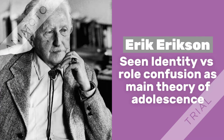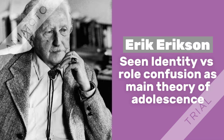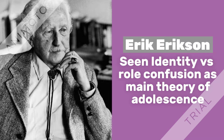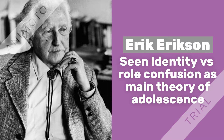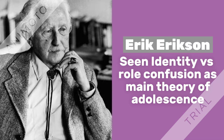Erik Erikson believes that identity and role confusion occurs during the 12 to 18 years gap and that the transition from childhood to adulthood is the most important because the child has to learn the roles he will occupy as an adult and the adolescent will re-examine his identity and try to find out exactly who he or she is. It is around this time that they form their own identity from the outcomes of their exploration, and if they don't establish a role in society, there are consequences.